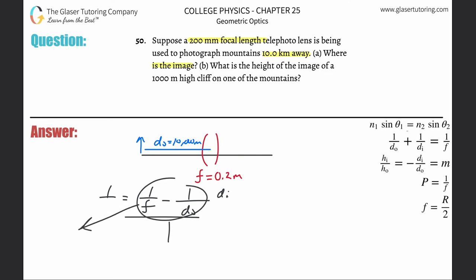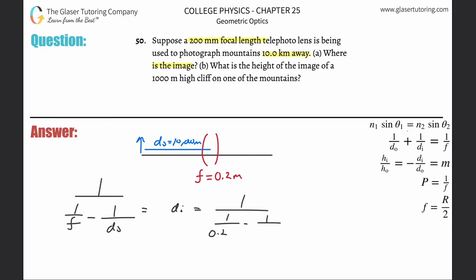This whole denominator comes out. We bring that whole thing on down and clean it up just ever so slightly. There's the formula, and now this is going to be 1/(1/f - 1/do). So 1/(1/0.2 - 1/10,000).